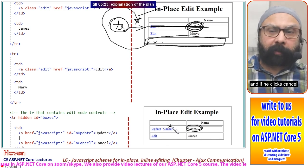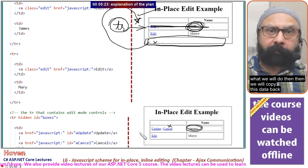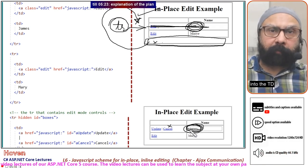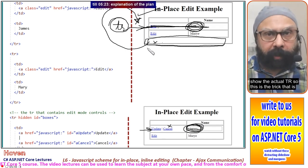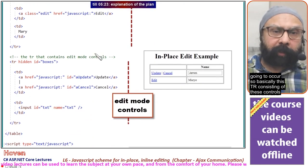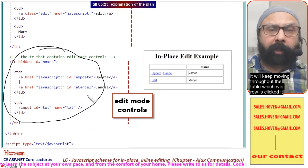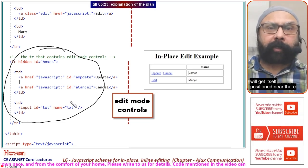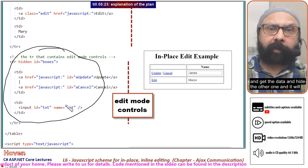If he clicks cancel, we move this record out of edit mode. We copy the data back into the TD, hide this one, and show the actual tr. This is the trick: this tr with controls keeps moving throughout the table. Whichever row is clicked, it positions itself there, gets the data, hides the original row, and shows itself.